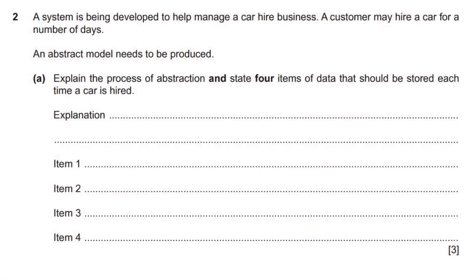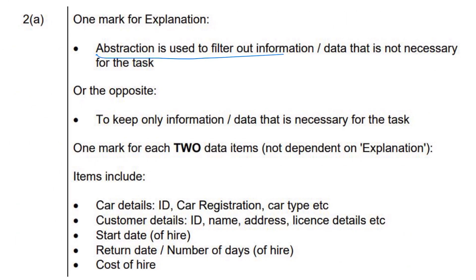Those are the main concepts in what is going to be a short topic. We're going to solve some practice problems to give you an idea of how these concepts will be applied to the A-level exam. Our first question: a system is being developed to help manage a car hire business. A customer may hire a car for a number of days. An abstract model needs to be produced. Part A asks us to explain the process of abstraction. When asked to explain abstraction on the A-level exam, generally abstraction involves filtering out data that's not of use, or just focusing on the most important aspects of a program. If you look at the mark scheme, abstraction is used to filter out information or data that is not necessary for the task, or to keep only information or data that is necessary for the task — that's the most common and acceptable answer.